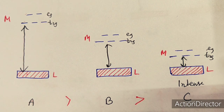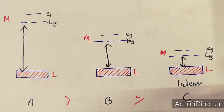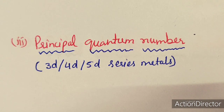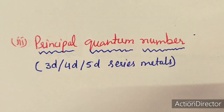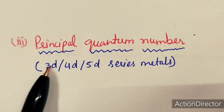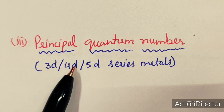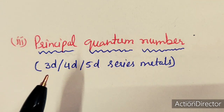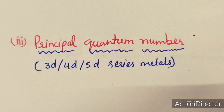The third metal factor is principal quantum number. For transition metal complexes this means 3d, 4d, or 5d series. Principal quantum number affects the gap between the energy levels of ligand and metal orbitals.